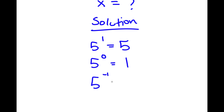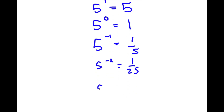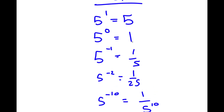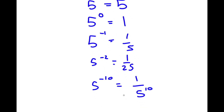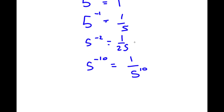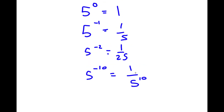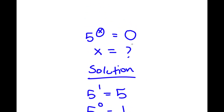If I have 5 to the power of negative 1, this is going to be 1 fifth. If I have 5 to the power of negative 2, this is going to be 1 over 25. If I have 5 to the power of negative 10, this is 1 over 5 to the power of 10. So as the exponent keeps on decreasing, it's approaching infinity — but will it ever reach infinity? Let's see if we can even find a value of x that makes this equal to 0.